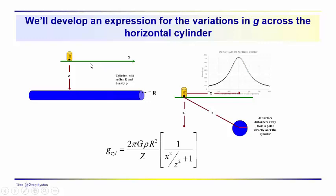If we're running our survey along the length of the cylinder, we really aren't going to see any variation. So the anomaly — the solution that we want to obtain — is one which describes the shape of the anomaly when we cross the cylinder perpendicular to its axis. X is our coordinate relative to a zero location directly over the center of the cylinder.